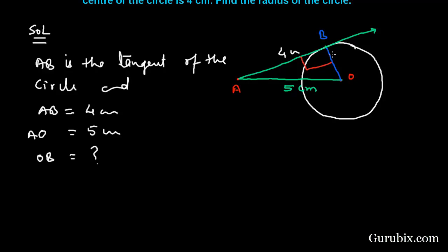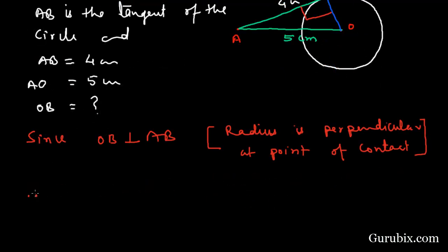Therefore angle OBA is 90 degrees. Since OB is perpendicular to AB because the radius is perpendicular at the point of contact, angle OBA equals 90 degrees.